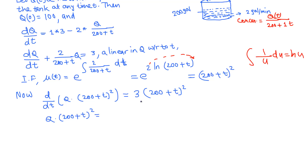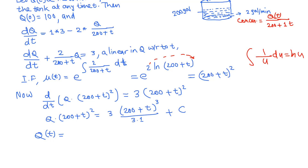Integrating both sides with respect to t: the left side gives q · (200 + t)². On the right, 3 is a constant pulled outside. The antiderivative of (200 + t)² by the power rule is (200 + t)³ / 3, since the coefficient of t is 1. This gives 3 · (200 + t)³ / 3 + C = (200 + t)³ + C. Dividing by (200 + t)² to isolate q: q = (200 + t) + C · (200 + t)^(−2).